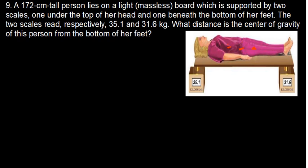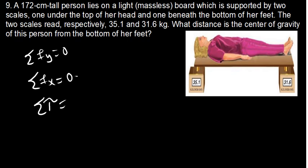When trying to solve any question under static equilibrium, the first thing is to consider the mass of the board. In this question they say the board is massless, meaning it has no mass. There are three conditions under static equilibrium: the sum of all forces in the y direction equals zero, the sum of all forces in the x direction equals zero, and the sum of all torques equals zero. If these conditions are satisfied, the system is at static equilibrium.